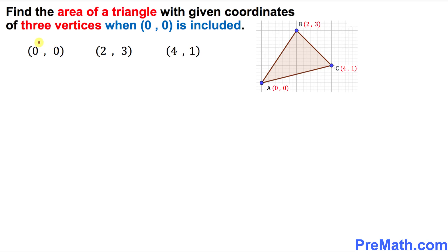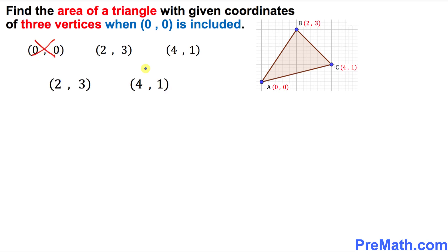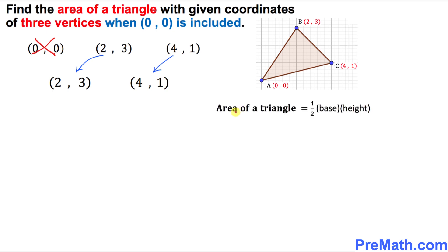The very first thing I want to make sure is that you simply disregard this zero zero — just ignore it, we will not need this point. So what that means is we're going to end up with just these two points, as you can see. We know that the area of a triangle is always equal to one-half times base times height, but in our case we don't know the base or height value, so we're not going to use that formula.